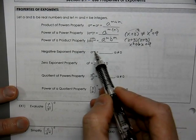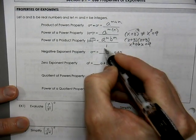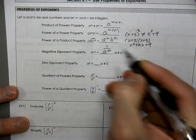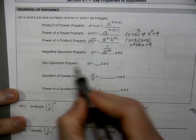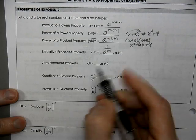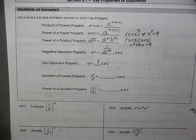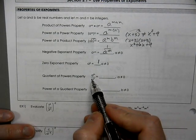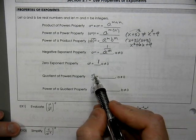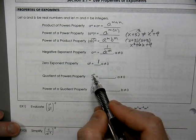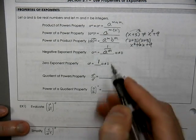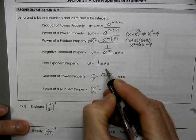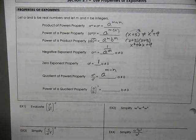What happens if you have a negative exponent? If it's a negative exponent, you put it into the denominator. If you have an exponent that's a zero, that's always going to have the value of 1. Now here, if your bases are the same, we're going to subtract exponents.